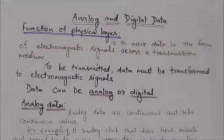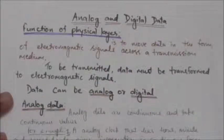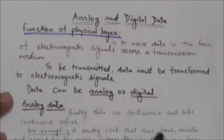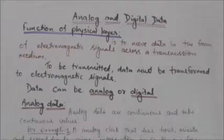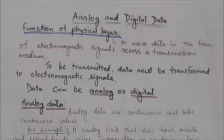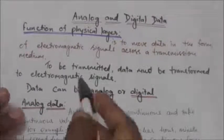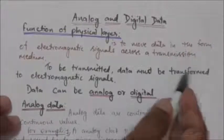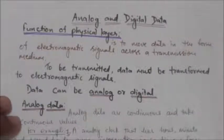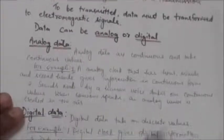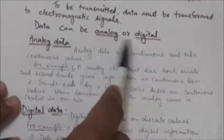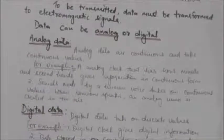Hello friends, welcome back. In this tutorial we will study about analog and digital data. As we know, one of the major functions of the physical layer is to move data in the form of electromagnetic signals across a transmission media. Generally, the data which is usable to a person or application is not in the form that can be transmitted over a network, so to be transmitted, data must be transformed to electromagnetic signals. Data can be analog or digital.